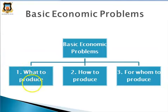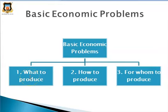The first one is 'what to produce,' the second is 'how to produce,' and the third is 'for whom to produce.' The 'what to produce' problem arises because land, labour, capital, machines, tools, equipment, and natural resources are limited, and every demand of every individual in the economy cannot be satisfied. So the society has to decide what commodities are to be produced and to what extent.